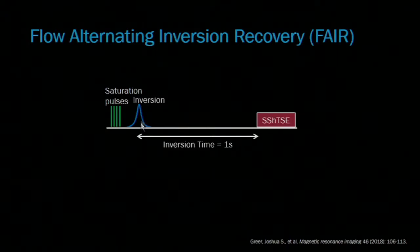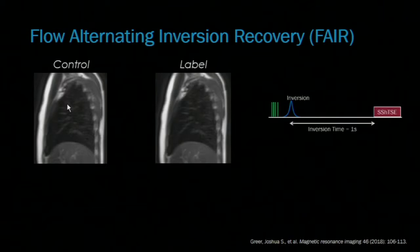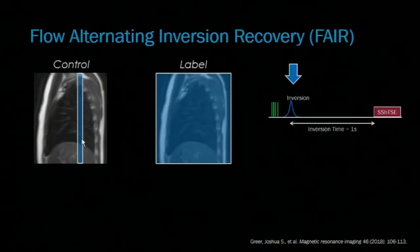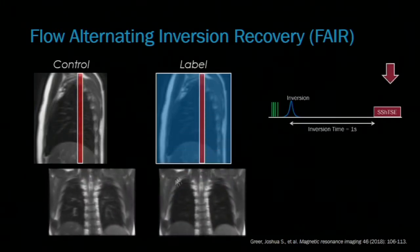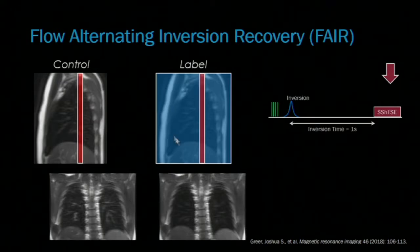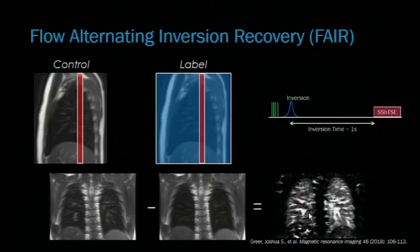FAIR is an ASL technique established for lung perfusion imaging. It consists of saturation pulses and a labeling inversion pulse centered on our imaging plane, a post-labeling delay to allow that labeled blood to perfuse the tissue, and then our acquisition. In our control image, we apply a selective inversion pulse, and in our label image, a non-selective inversion. After the post-labeling delay, we acquire our images in the same plane. The difference between these images is proportional to the blood flow from the wider inversion region into our imaging plane, and we can subtract them to create a perfusion-weighted image.